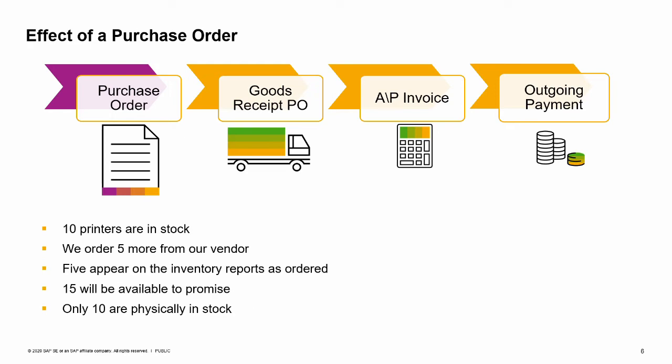Back to our business example: currently, we have 10 printers in stock. We create a purchase order to buy 5 more from our vendor. After the purchase order is saved, a quantity of 5 appears on the inventory reports as ordered. Since we have 10 printers in stock and 5 on order, 15 will be available to promise to our customers, although only 10 are physically in stock.